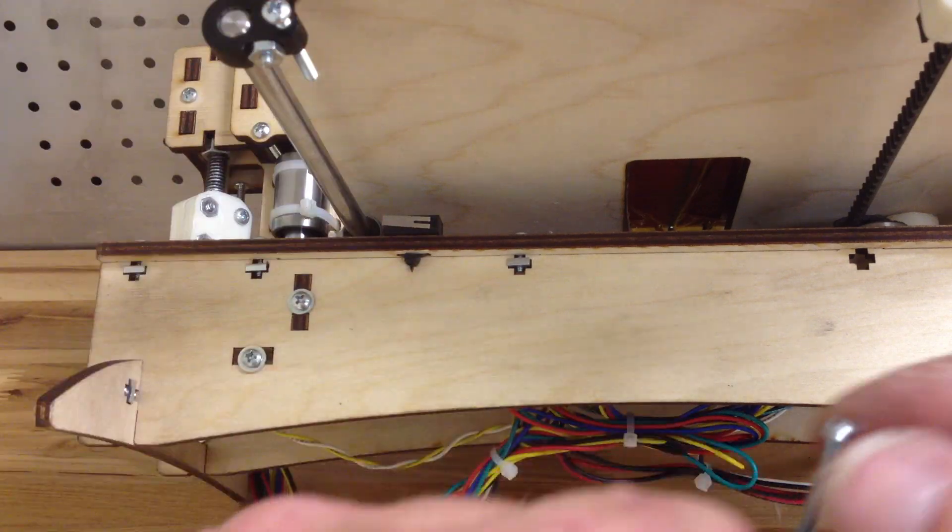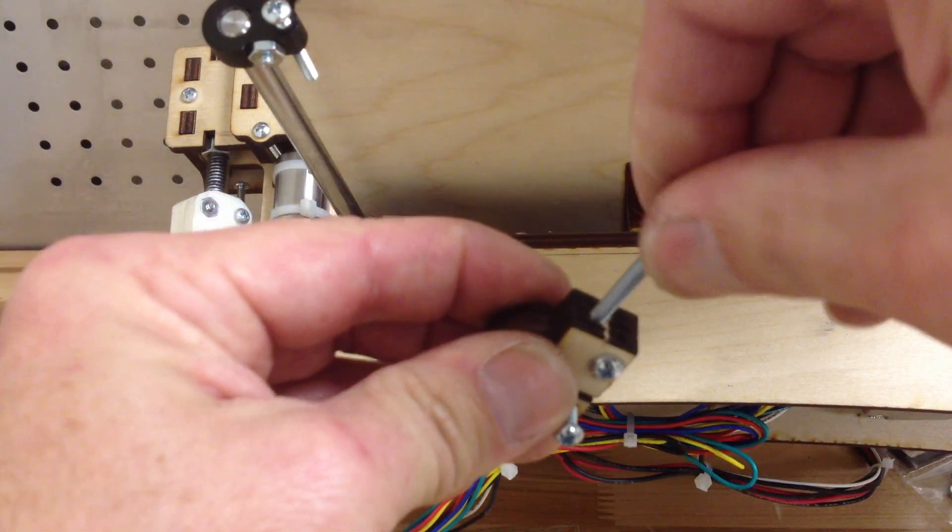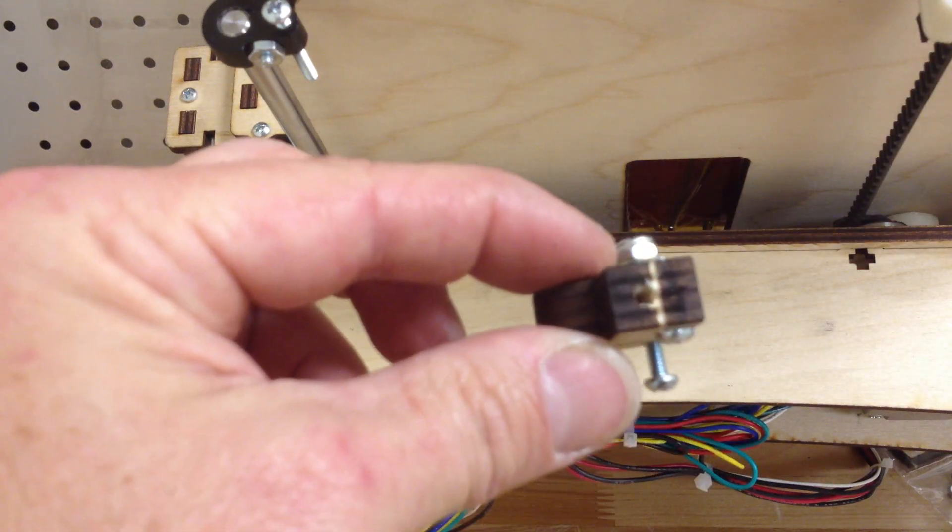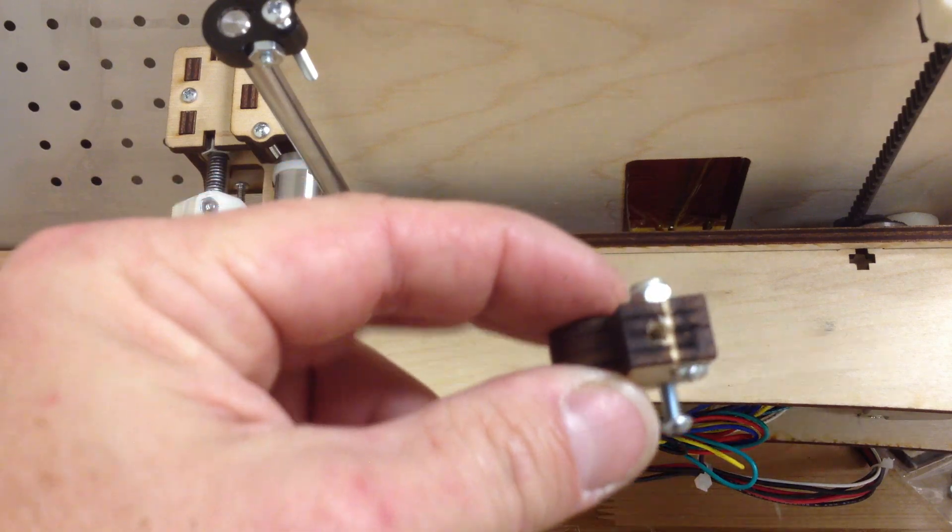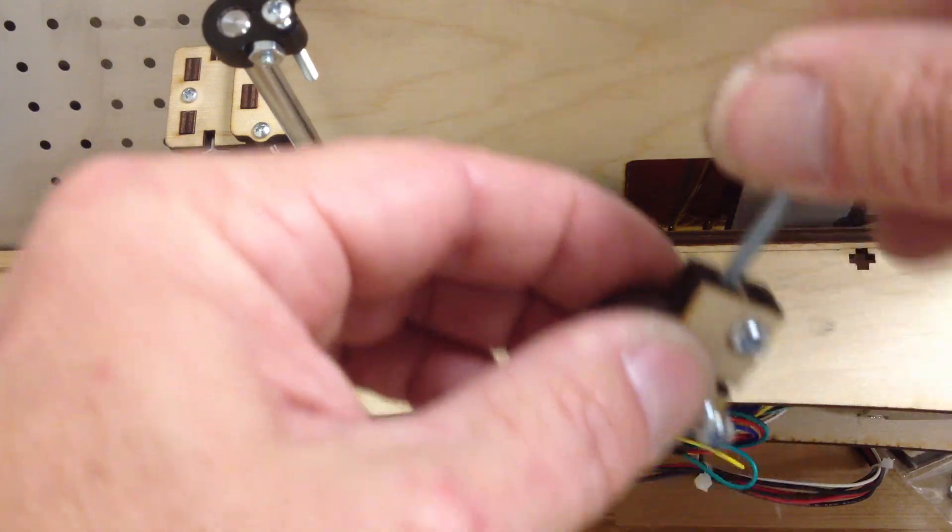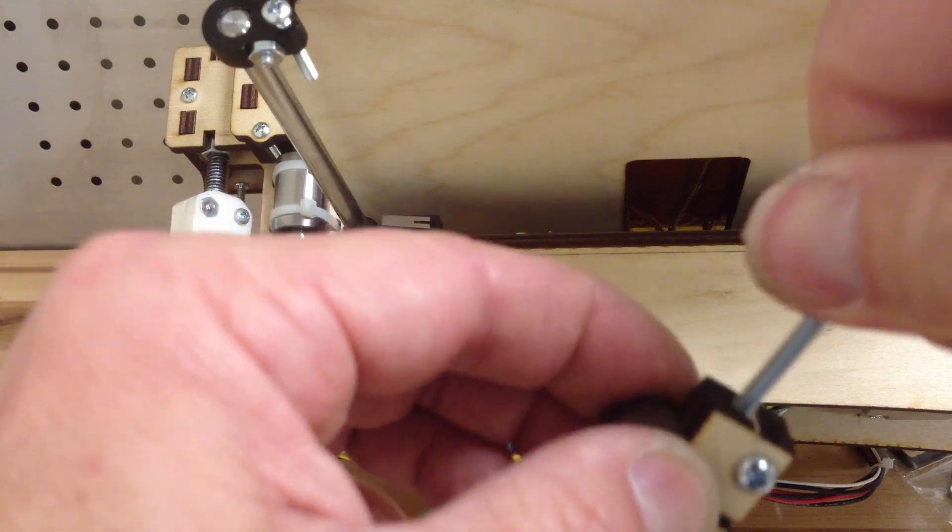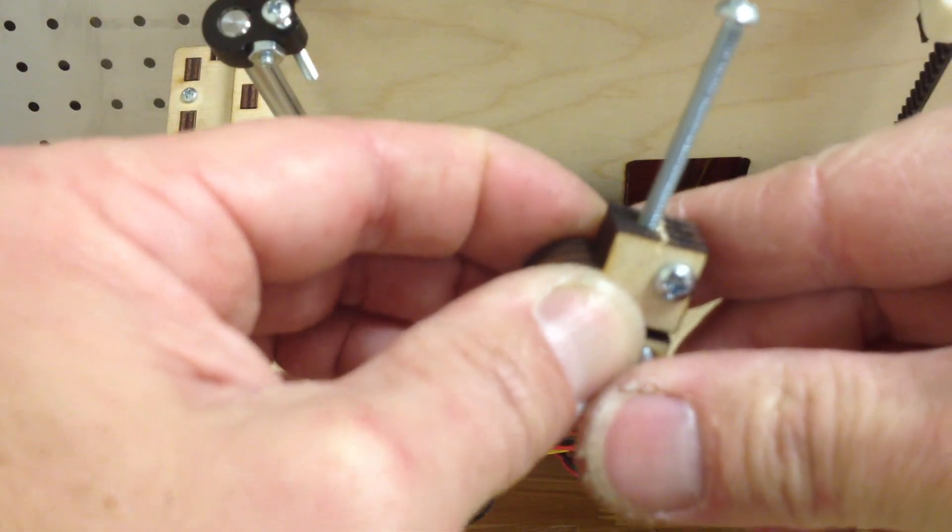When you sandwich these together, it makes a hole. You can see that. It is a square hole, so when you put the screw in, you could drill that out or you could just screw down into it. It's going to grab. It doesn't just slide right in.